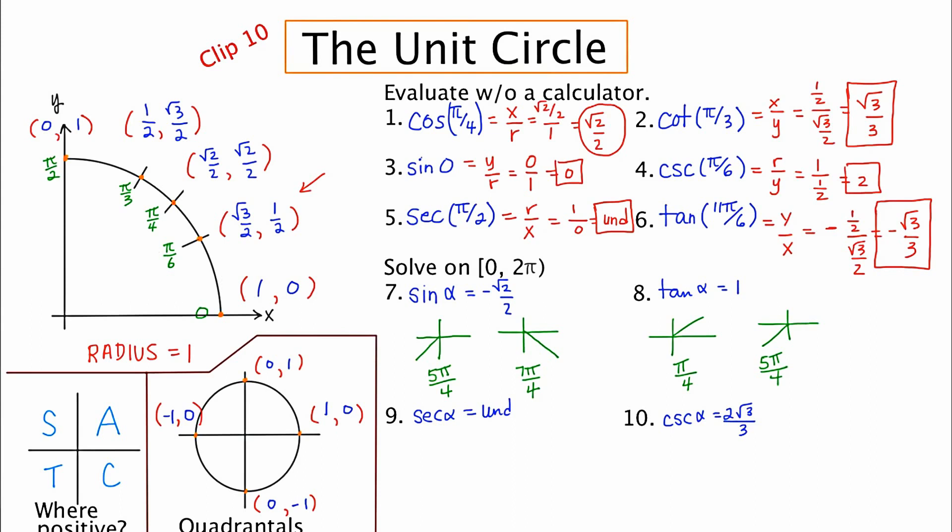Now, the next problem is given to me as a secondary function and I feel just more comfortable working with primary, so I'm going to reciprocate. The reciprocal of secant is cosine. And the reciprocal of undefined, which is one over zero, is zero over one or zero. So now the problem is a little bit easier for me to deal with. I'm going to figure out where cosine is zero. Now cosine is X over R and R is always one. So in order to get an answer of zero, it's really where is X zero. And X is zero here at pi over two and here at three pi over two. So the answers are pi over two and three pi over two.